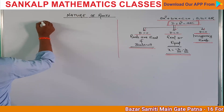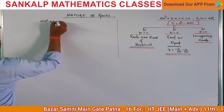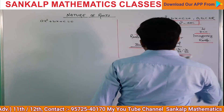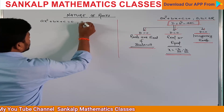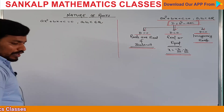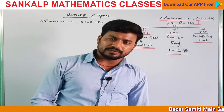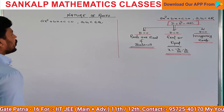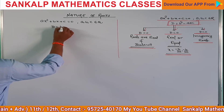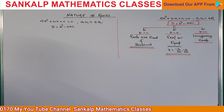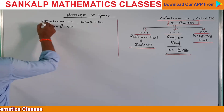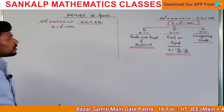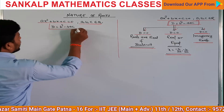इसी की मैं दूसरी approach दिखाता हूँ आपको। आपकी quadratic equation ax² + bx + c = 0 है — अभी मैंने बात किया था ABC real number होगी। अब मैं बात करता हूँ ABC belongs to Q — rational number। Q से किसको लिखते हैं — rational number को। D equal to b² - 4ac ये होता है।